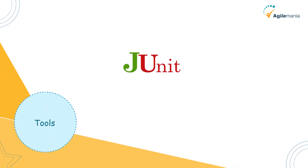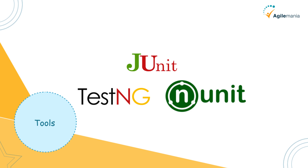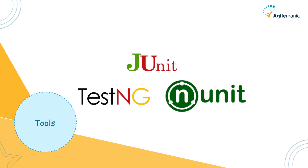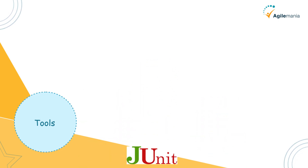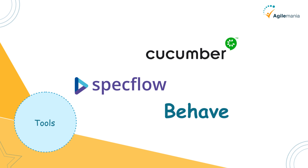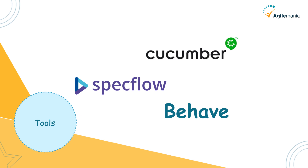The next aspect is tools. Popular tools for TDD include JUnit, NUnit, and TestNG — frameworks that allow developers to write and execute tests efficiently. For BDD, you'll often hear about tools like Cucumber, SpecFlow, and Behave. These tools support writing scenarios in plain language and connecting them to automated tests.